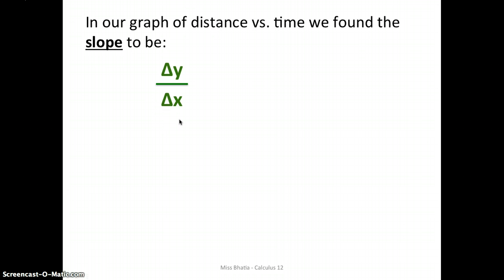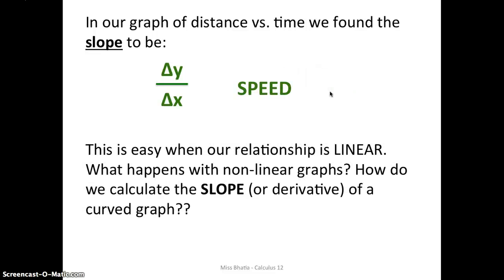Now delta y over delta x is also known as the derivative in calculus. We'll learn a little bit more about what the derivative means, but this is one of the first steps in calculus. Now in our graph, we found this to be our speed. This is really easy when our relationship is linear. We have a linear graph. It's very easy to calculate the slope. But what happens with non-linear graphs? How do we calculate the slope or the derivative of a curved graph? Now this is where calculus helps us out.